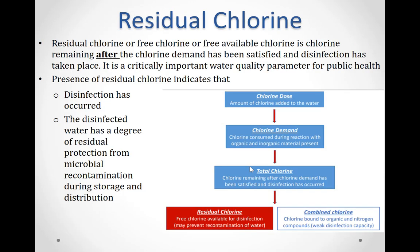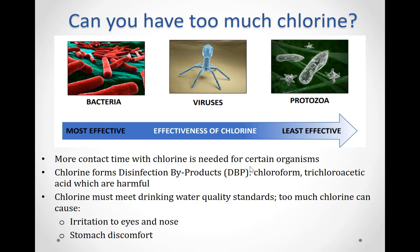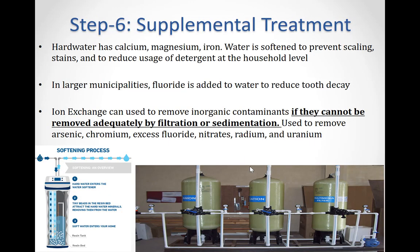Residual chlorine, or free available chlorine, is chlorine remaining after the chlorine demand has been satisfied and disinfection has taken place. It is a critically important water quality parameter for public health. Presence of residual chlorine indicates that disinfection has occurred and that the disinfected water has a degree of residual protection from microbial contamination during storage and distribution. However, chlorine also forms disinfection byproducts, or DBPs, such as chloroform and trichloroacetic acid, which are harmful. Thus, chlorine must also meet drinking water quality standards — too much chlorine can cause irritation to the eyes and nose as well as stomach discomfort.